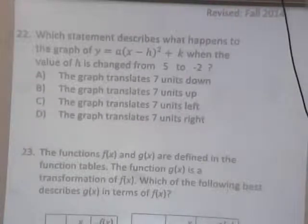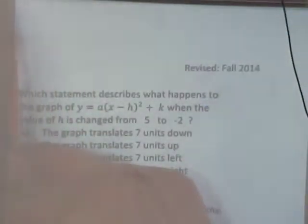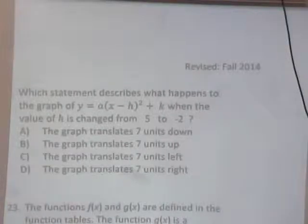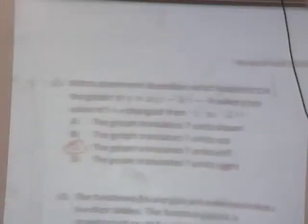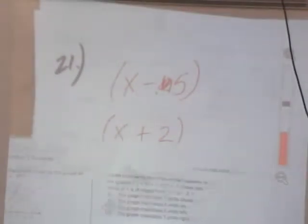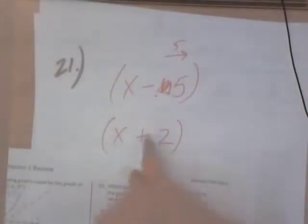It's going to change from this, x minus 5, x minus 5, and it's going to change to x plus 2. So this would originally be 5 units to the right, right? And this would originally be 2 units to the left. So from here to here, then, it would go to the left 7 units. Let's see. What I'm saying was this is originally 5 units to the right. And this is 2 units to the left. So the difference from here to here would be 7 units to the left.